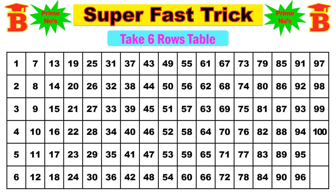First, take a 6-row table. We know that rows mean horizontal lines. So there are 6 rows: this is the 1st row, 2nd row, 3rd row, 4th row, 5th row, and 6th row. So, take a 6-row table like that.